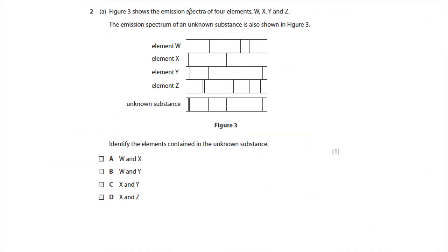Figure three shows the emission spectra of four elements W, X, Y and Z. The emission spectra of an unknown substance is also included in figure five. Identify the elements contained in the unknown substance. Remember, emission spectrum are produced when you get metals as a vapor and you excite them. And they produce line spectra, which you can see with a diffraction grating. So all you need to do is identify which lines are in the unknown. Element W has two lines here which aren't in there, so it can't be W. Element X has a line there and a line there, so that element is in the unknown substance. Element Y has two lines there which are in it, so it is that one as well. So it is X and Y, which is C.